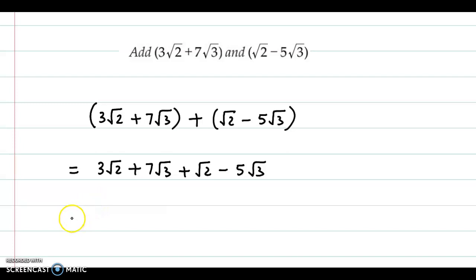Next we collect the like terms together. First we group the √2 terms: 3√2 + √2. Then we group the √3 terms: 7√3 - 5√3.